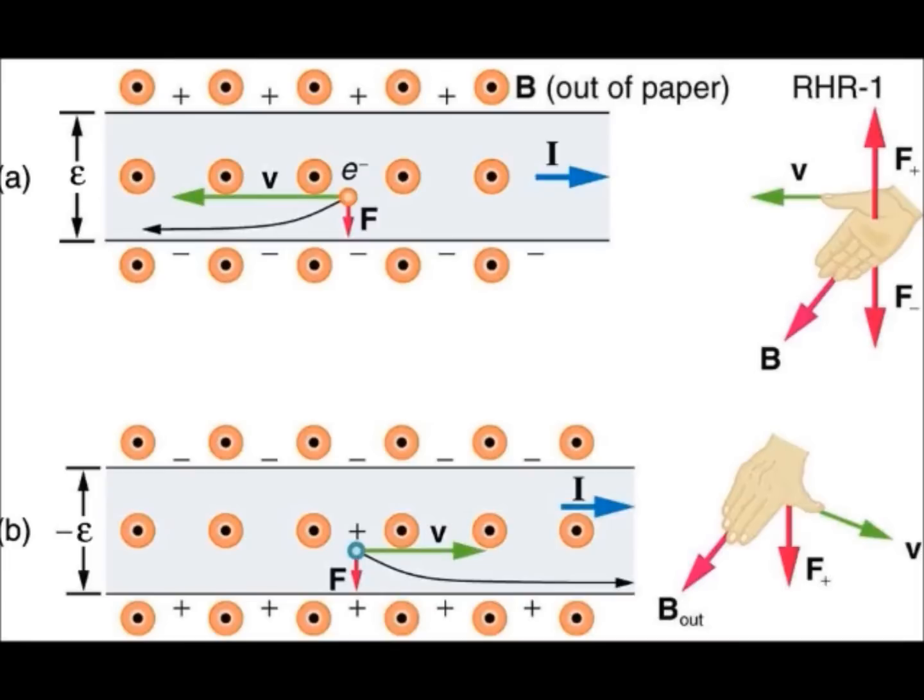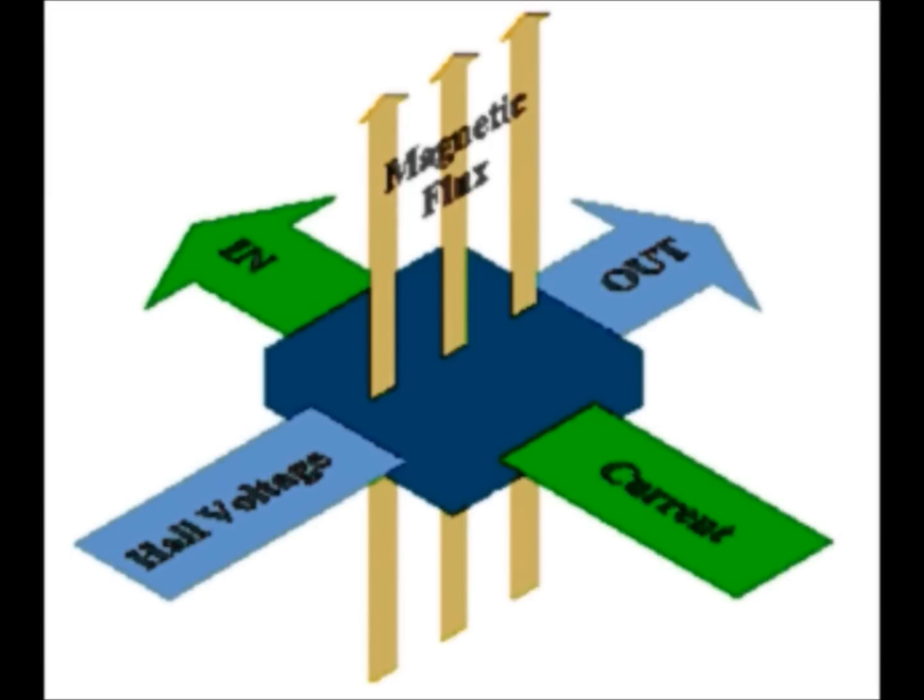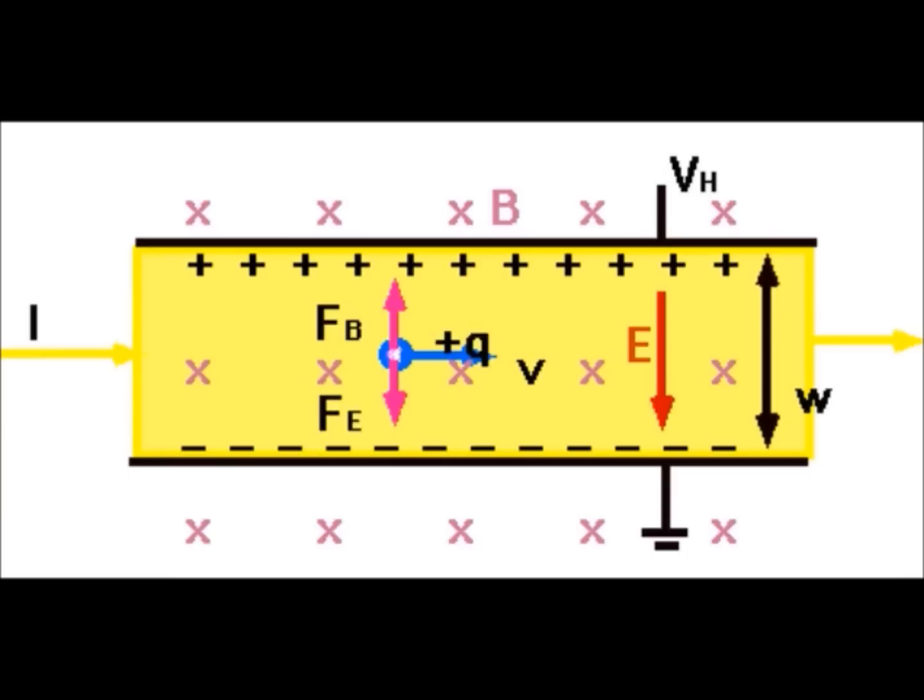First of all, what is Hall effect? Hall effect is the production of a voltage difference, which is called the Hall voltage, across an electrical conductor transverse to an electric current in the conductor and a magnetic field perpendicular to the current.